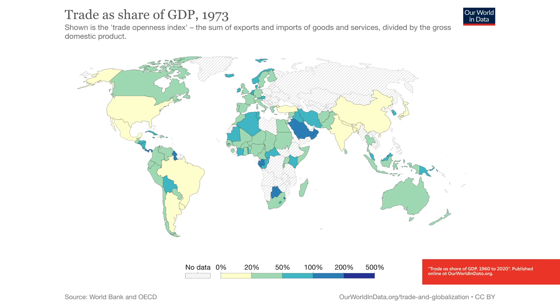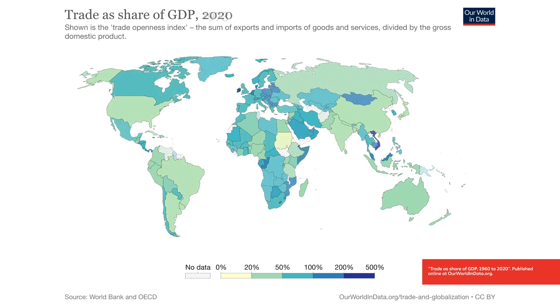The World Bank tracks data across countries on the amount of exports and imports they have relative to their output. If we look at the world map of this data for 1973 and compare it to the map in 2020, we see that the amount of international trade relative to economic output rose in almost every country and attained high levels, especially in Europe, Africa, and North and South America.